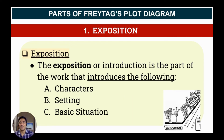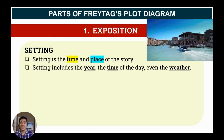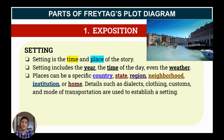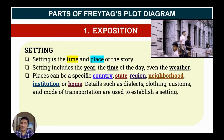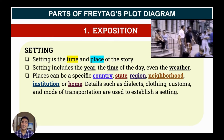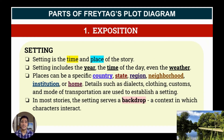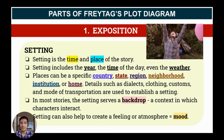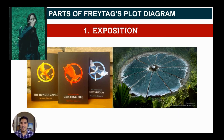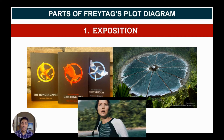I'd like to focus more on the setting. Setting is the time and place of the story. It includes the year, the time of day, even the weather. Places can be a specific country, state, region, neighborhood, institution, or home. Details such as dialects, clothing, customs, and even mode of transportation are used to establish a setting. In most stories, the setting serves as a backdrop — a context in which characters interact. Setting can also help to create a feeling or atmosphere, which we call the mood. In the Hunger Games, especially the first part, the arena is the most popular setting — that's where the characters fought and interacted with each other in order to survive.